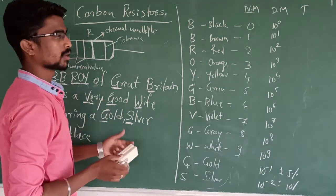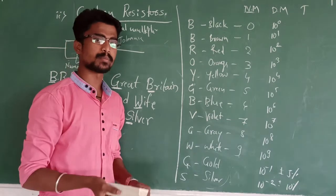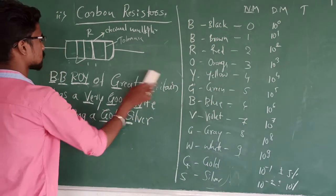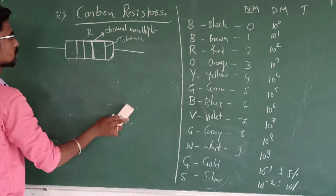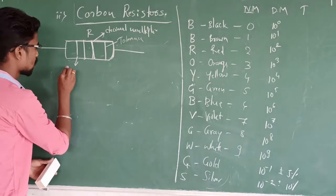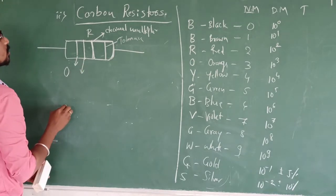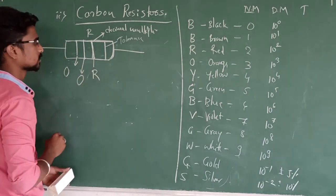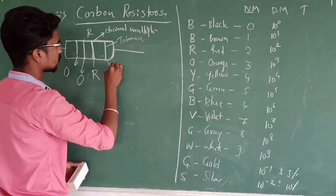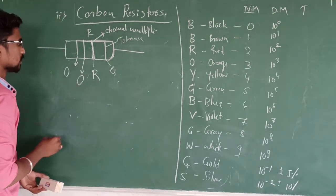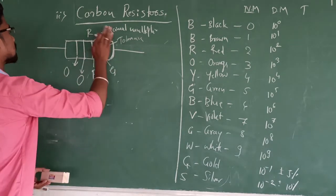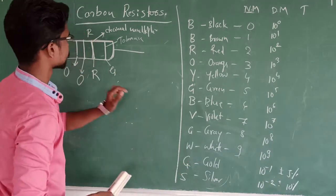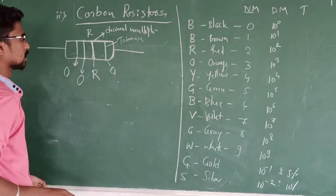We can remember this as: BB Roy of Great Britain has a Very Good Wife Wearing a Gold Silver necklace. For example, this resistor has colors: Orange, Orange, Red, and Gold.